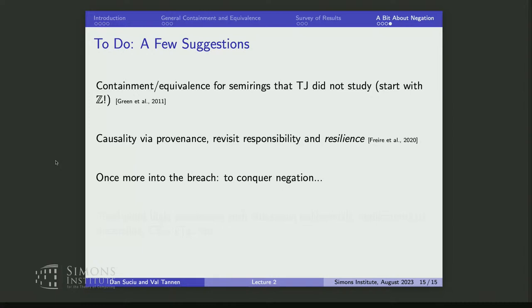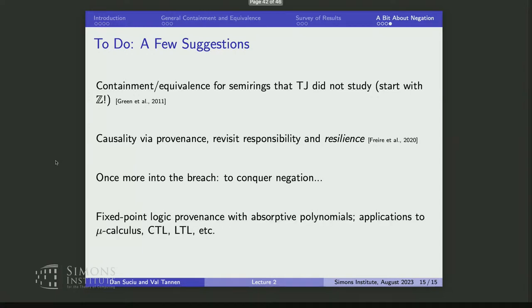A few calls to arms: look at containment and equivalence for semirings TJ did not study, like absorptive semirings. Also interesting is semantics over relations annotated with integers, related to incremental view maintenance — a paper at VLDB next week. I'm also fascinated by revisiting responsibility and resilience using more expressive provenance polynomials, which may give a more modulated notion of causality. And once more into the breach to conquer negation. Finally, absorptive polynomial provenance for fixed-point logic applied to temporal logics like CTL would be really interesting.